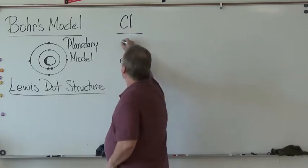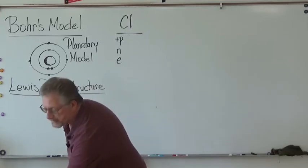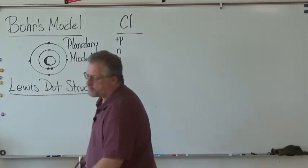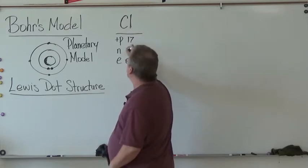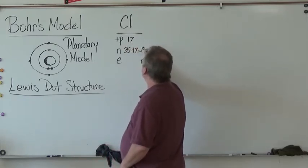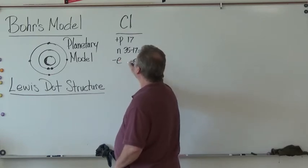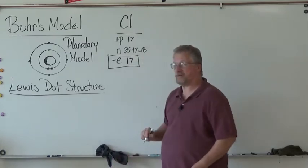Chlorine. And of course, we got our number of protons, neutrons, electrons. And if we look at our handy-dandy periodic table, we have 17 protons, and there's going to be 35 minus 17, that's going to be 18 neutrons. And negative electrons, we're going to start off with 17.